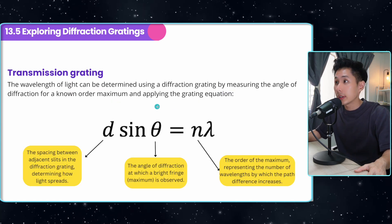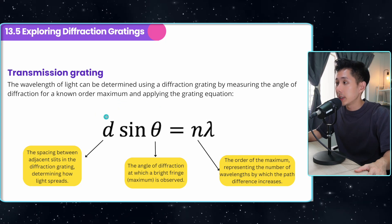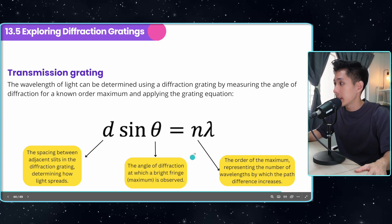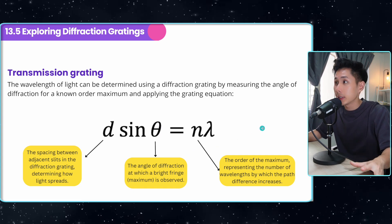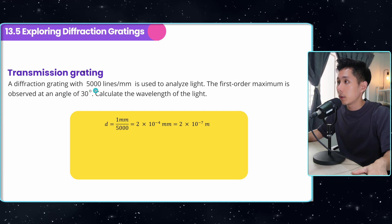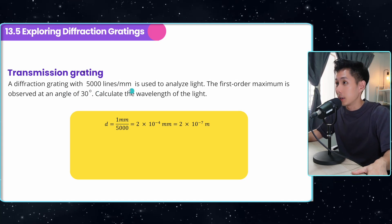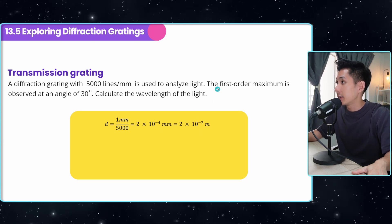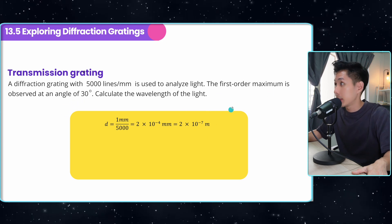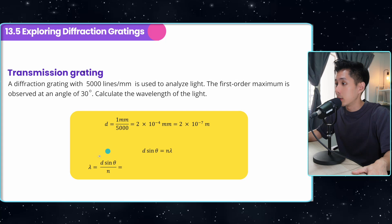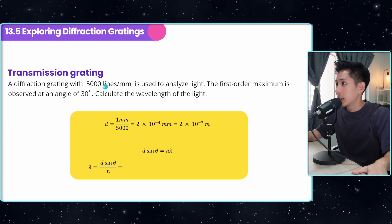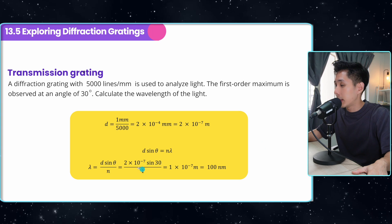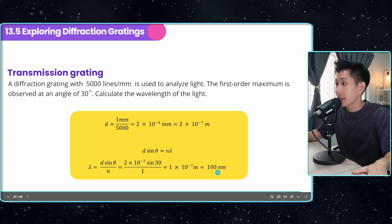There's an equation for diffraction grating problems. D stands for the spacing between adjacent slits, lambda for the wavelength, and n for the order of maximum. In a worked example: a diffraction grating has 5000 lines per millimeter, so d equals one divided by 5000 mm. The first-order maximum is observed at an angle of 30°. Substituting all values into the formula gives the wavelength of the light.